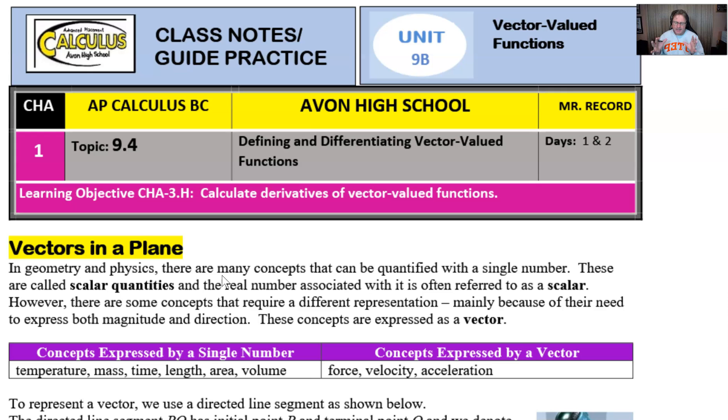But there are a lot of concepts that require just a little bit of a different type of representation, mainly because they have a need to express two different ideas: magnitude and direction, which is a very common component in a lot of physics courses. And so, we're going to use the concept of a vector to express things like that. Things like temperature and mass and time and length, area, volume, all of those ideas we can use the scalar, a numerical value. But when you're talking about forces or velocities, even in the true sense, and accelerations in their true sense, we need to really think more of a vector.